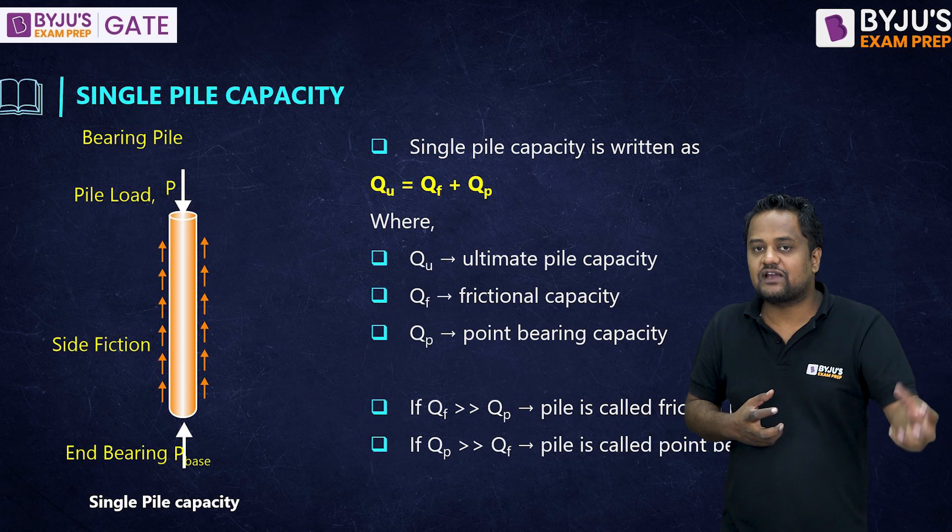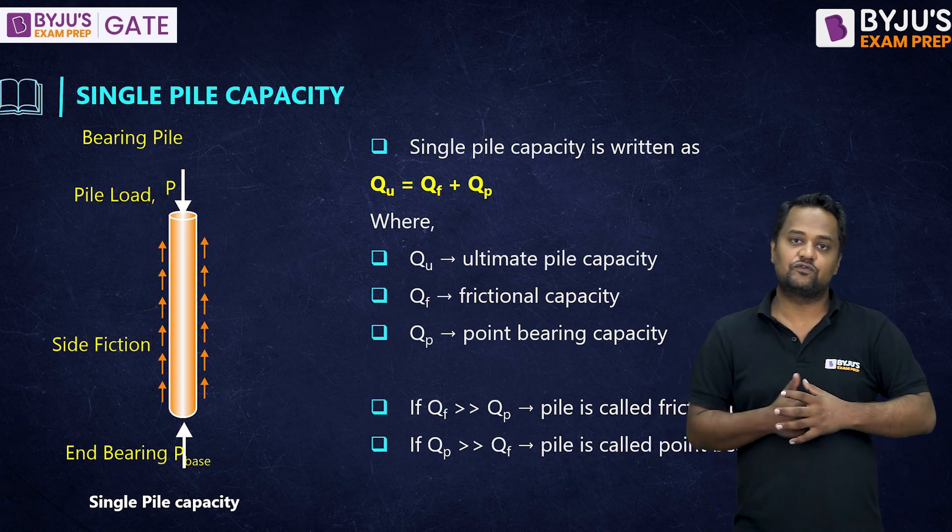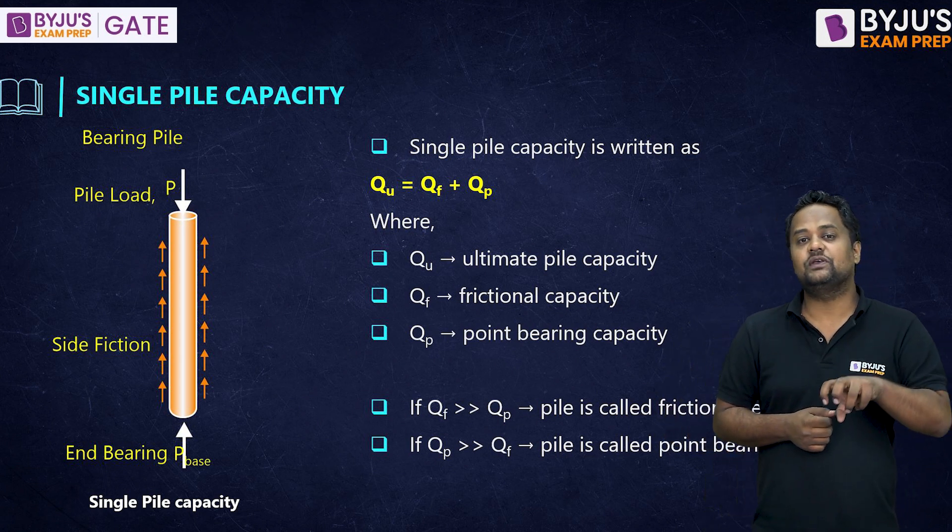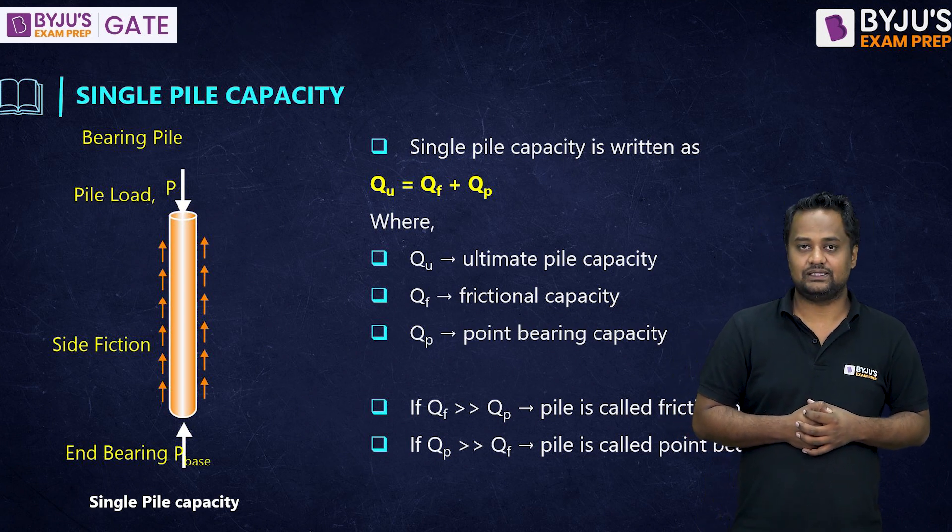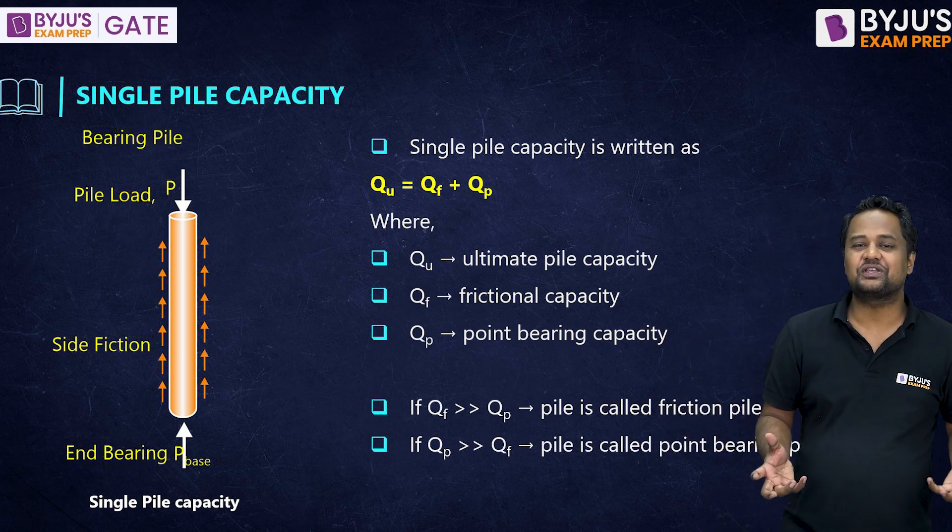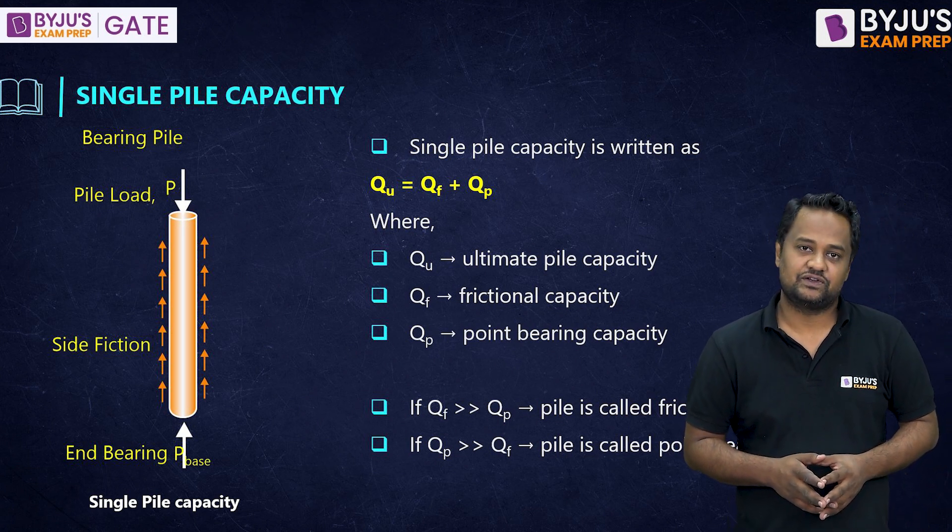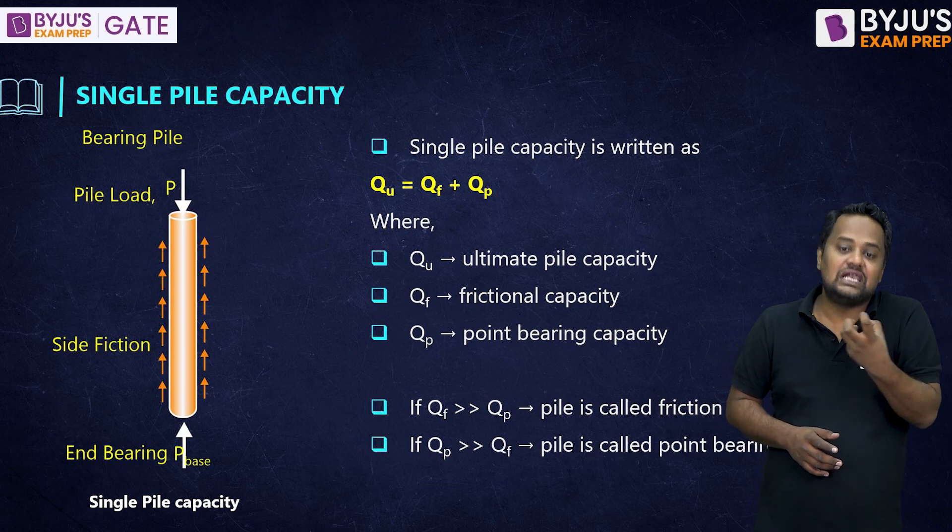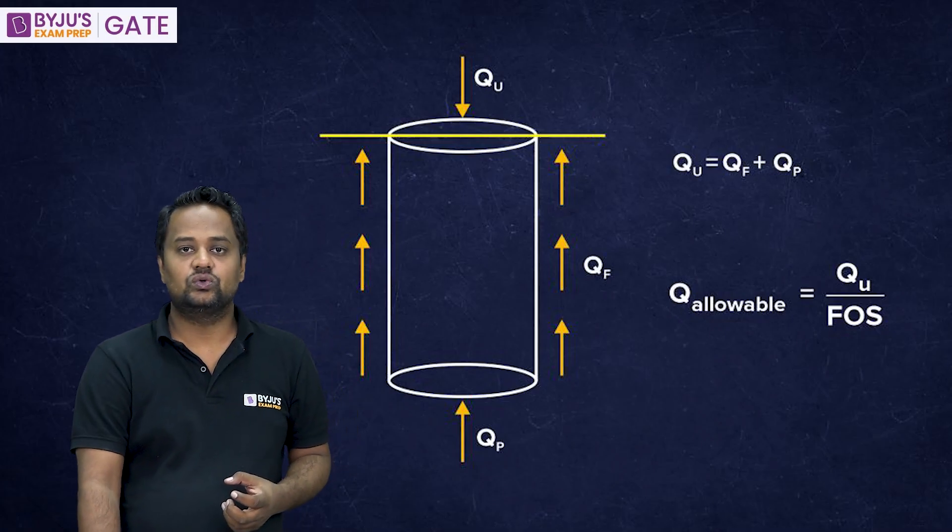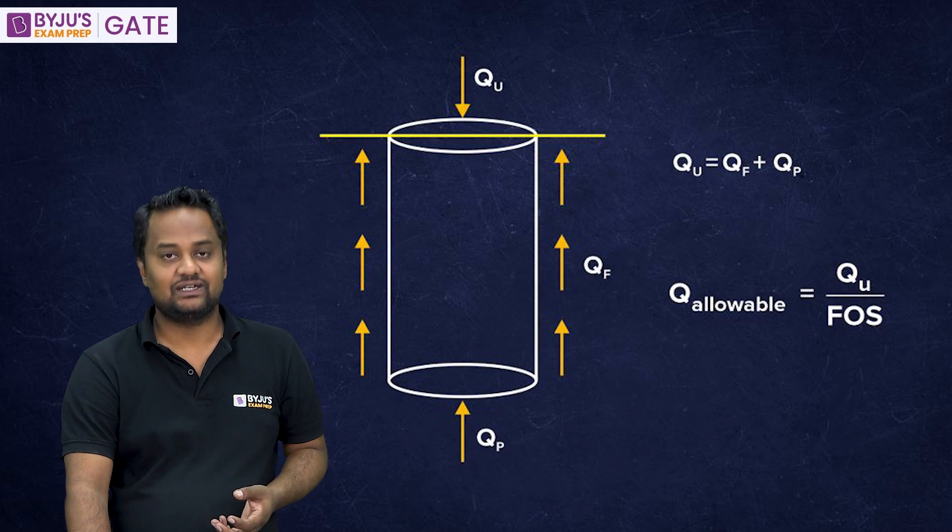If QF value is far, far more than QP, then it is a frictional pile and if QP value is far, far greater than QF, it is the point bearing pile. Of course, if QP and QF both are almost same, that is neither point bearing nor friction pile. Now, this is the QU ultimate load that the pile can take. Of course, the allowable load is QU by factor of safety and if it is not given, we take it 2.5.